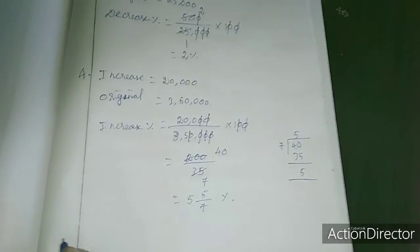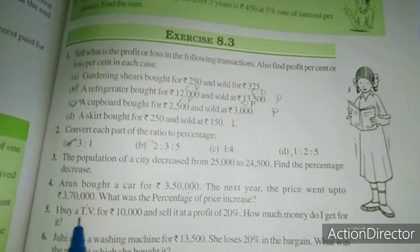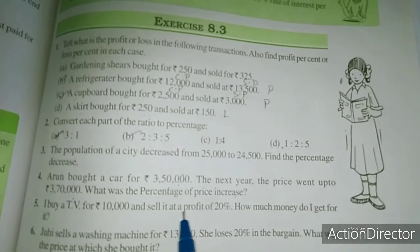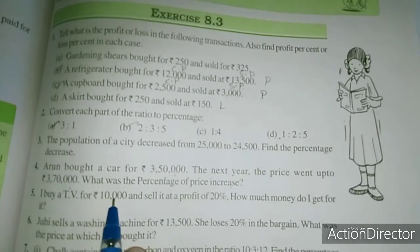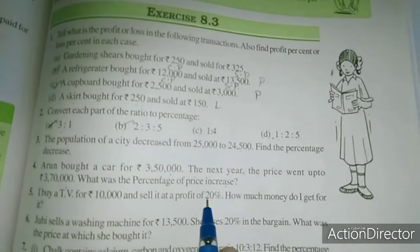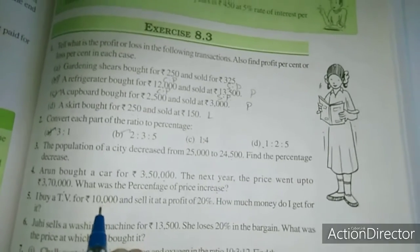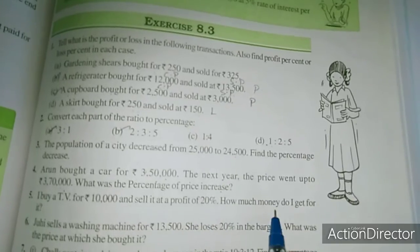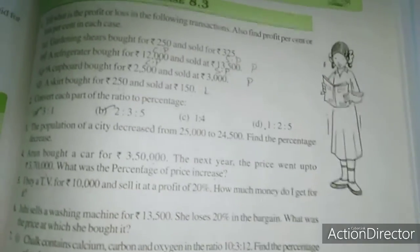Now we will move to the 5th sum. I buy a TV for 10,000 and sell it at a profit of 20%. How much money do I get for it? The cost price is 10,000.